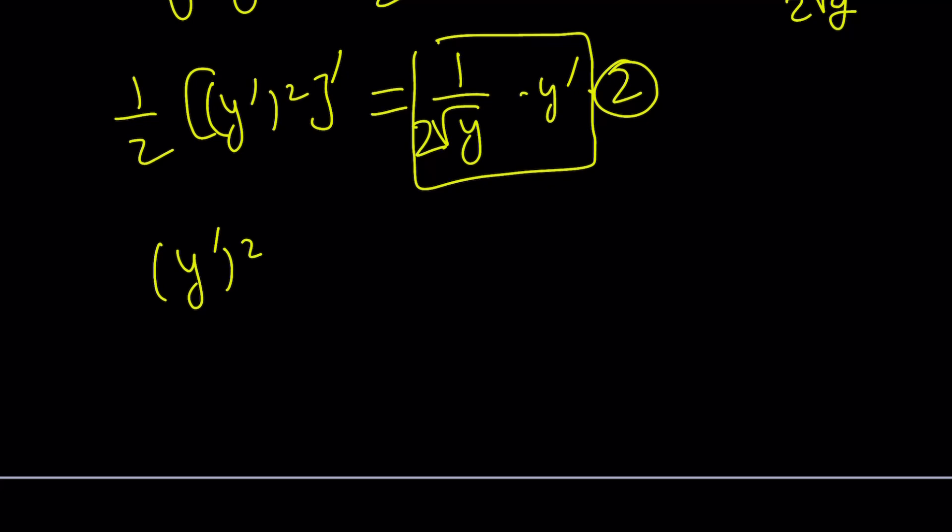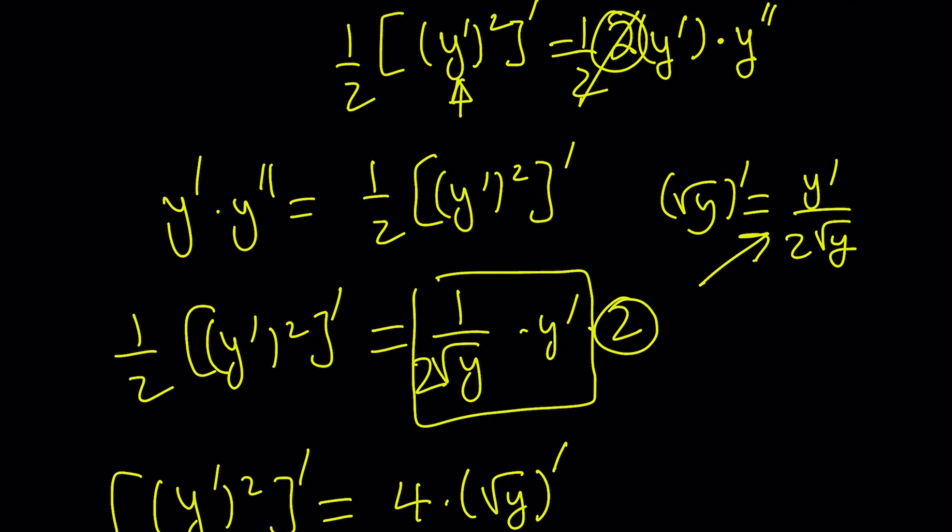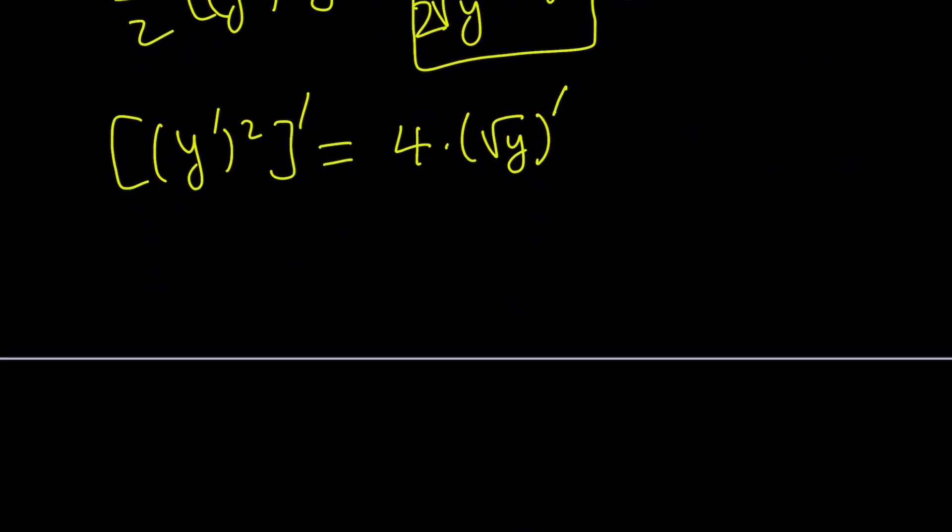We get y prime squared differentiated equals four times the derivative of square root of y. For this reason, I got square root of y differentiated. I hope it does make sense. Again, I'm using the chain rule in the opposite direction, so I'm kind of unchaining things.